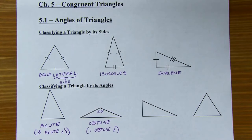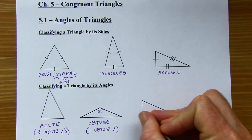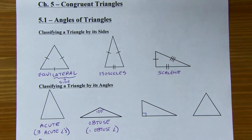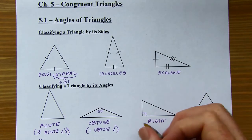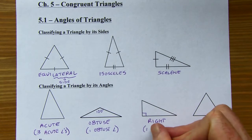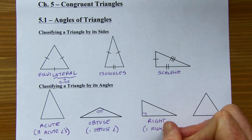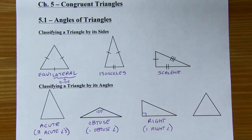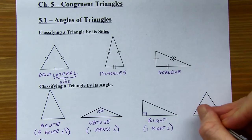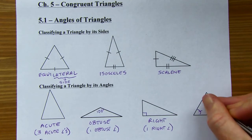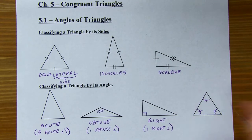You can actually only have one obtuse angle in a triangle — that's the maximum number, and we'll get to that later. And then if you've got one right angle, then you've got a right triangle. Again, you can only have one right angle in a triangle. And if all three of the angles are congruent, then this is called equiangular.